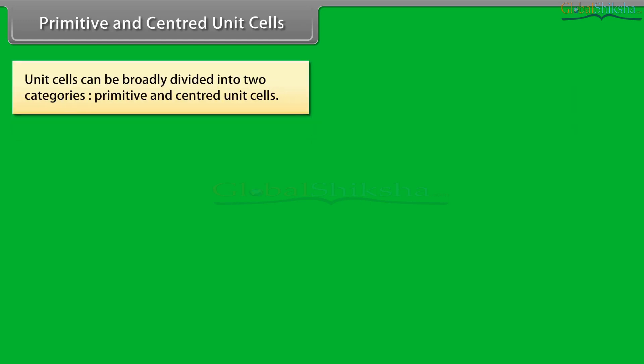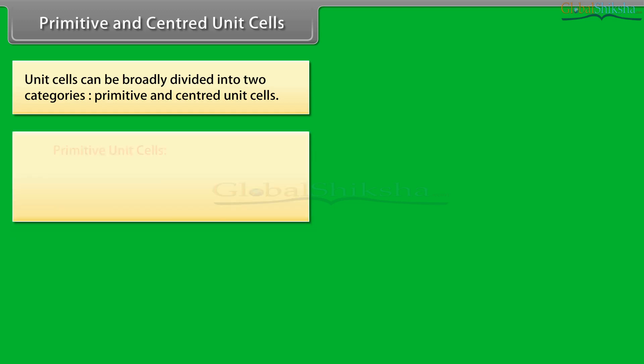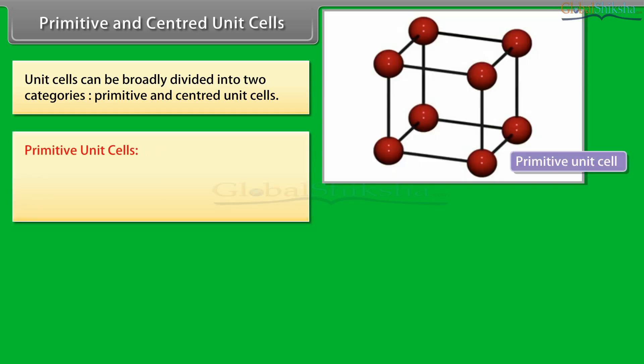Unit cells can be broadly divided into two categories: Primitive and Centered Unit cells. When constituent particles are present only on the corner positions of a unit cell, it is called a primitive unit cell.